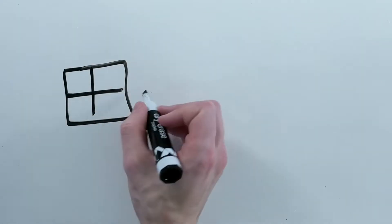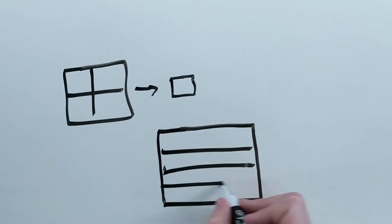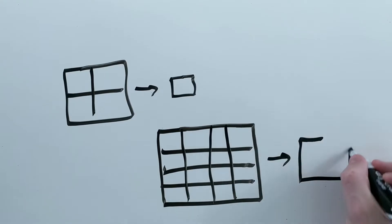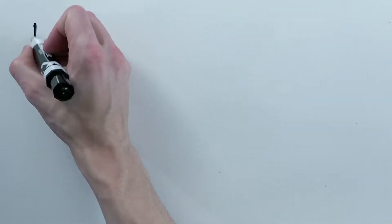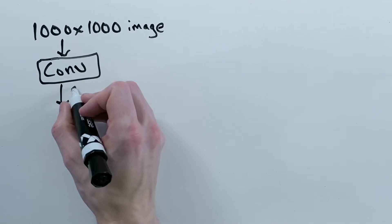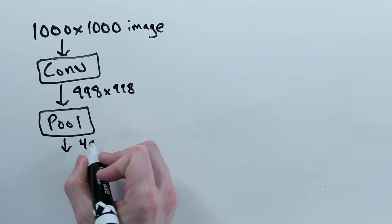Pooling like above reduces the size of the intermediate features by a factor of 2 every time you do it. Typically, you alternate convolutions and pooling layers until the intermediate features have a size around 1x1.